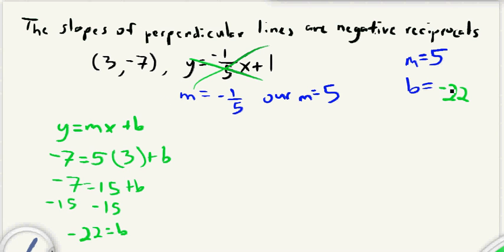And then the last thing we do is we just write our equation. So it's going to be y equals mx plus b, so we've got y equals, m is five, so five x plus negative 22, which we can just write as minus 22. And that's it. There's our line.